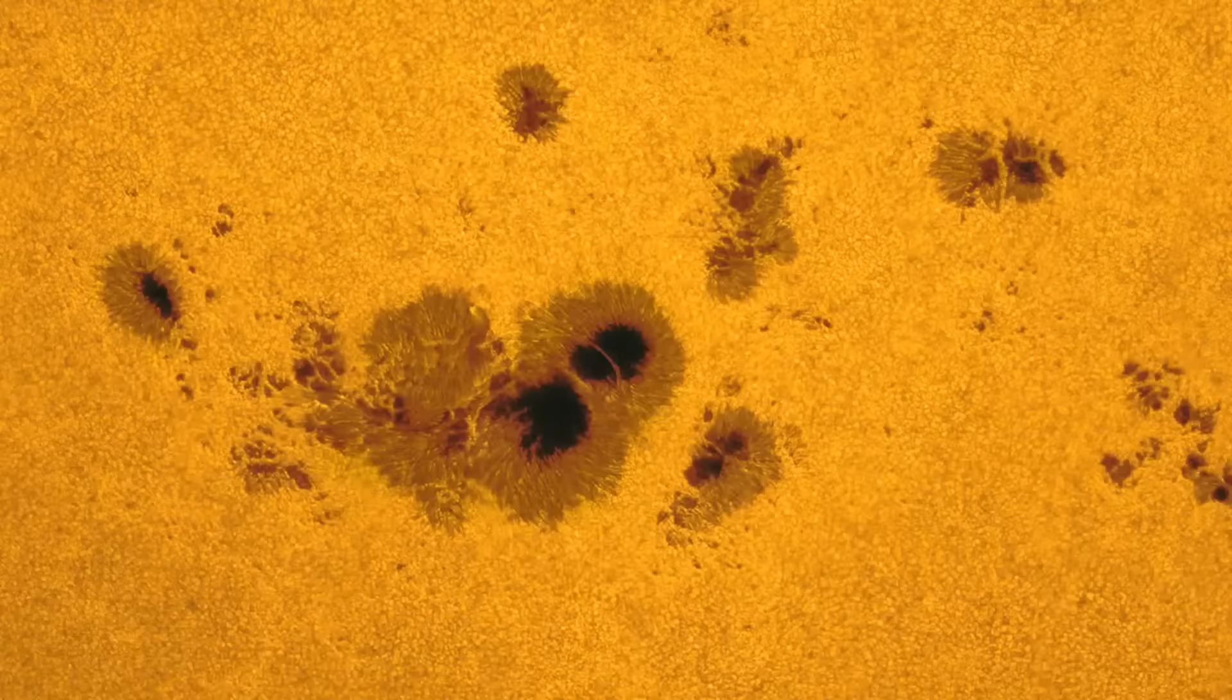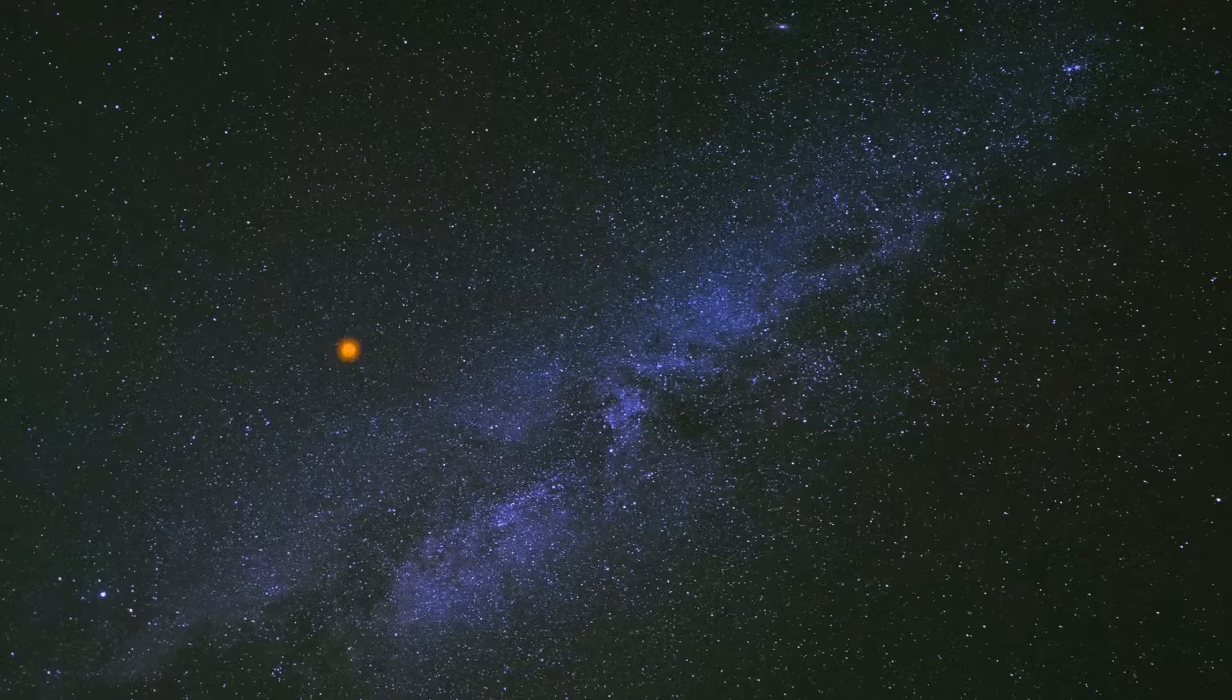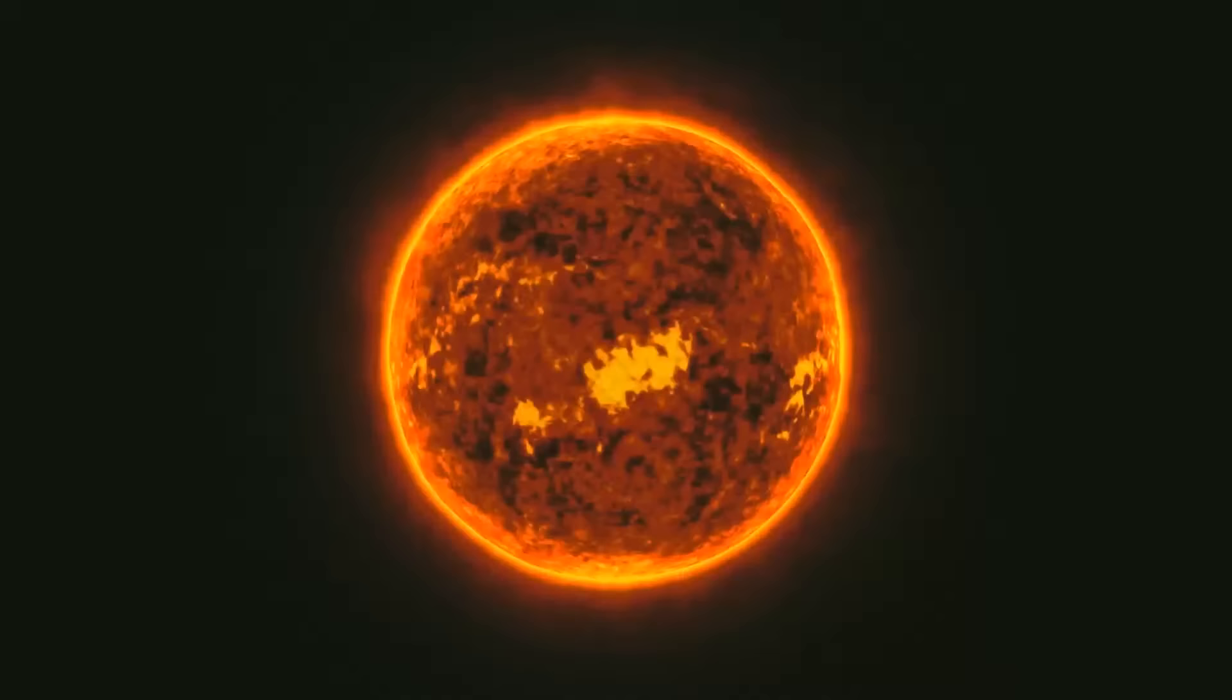One of the ways we measure the activity of our star is by counting sunspots on its surface. Sunspots are dark patches that form when the sun's magnetic field gets all tangled up. The more sunspots, the more active our sun is. And it seems the sun has been partying like crazy recently.